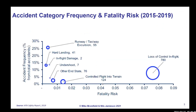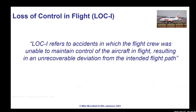Loss of control in flight is the most prominent fatal accident category. This statistical graph produced by IATA from 2019 shows accident frequency on the vertical axis and fatality risk on the horizontal axis. LOC-I is the most lethal accident type. There aren't a significant number of LOC-I accidents, but when they happen, unfortunately many people lose their lives. This graph covers full hull loss and fatal accidents, not non-fatal accidents.